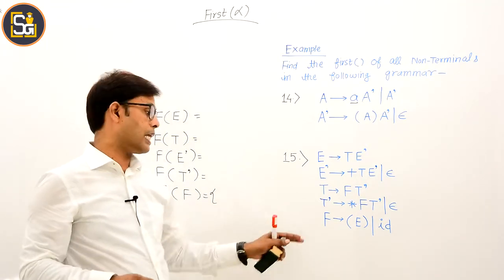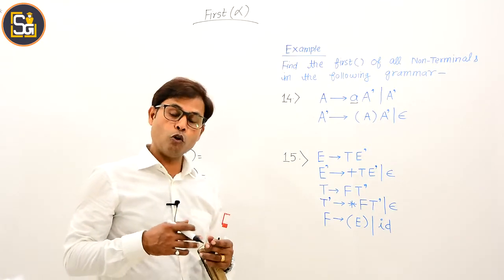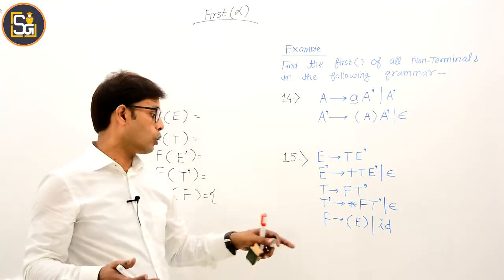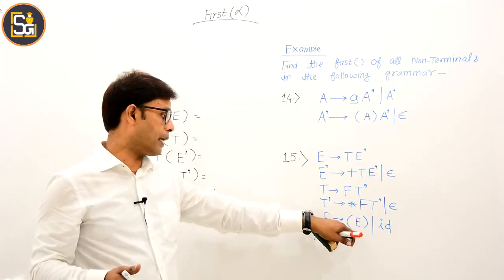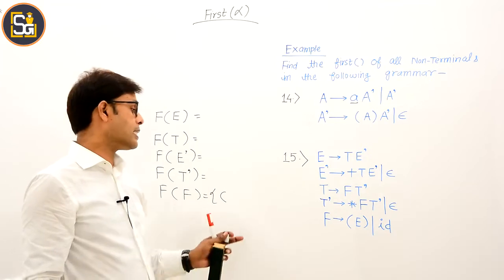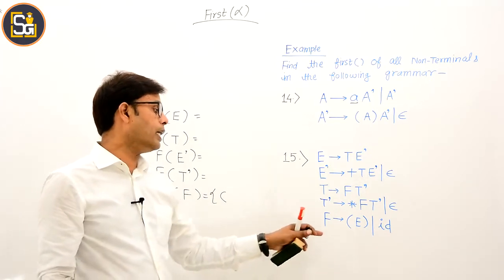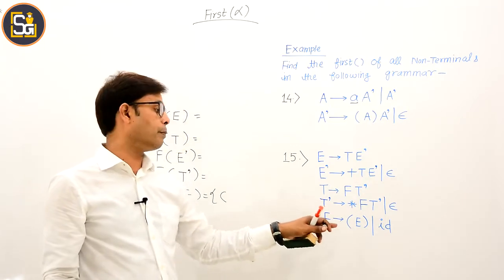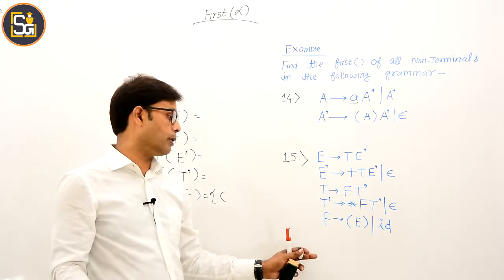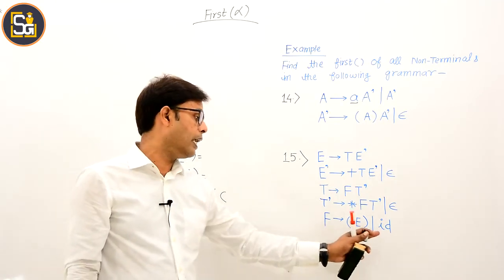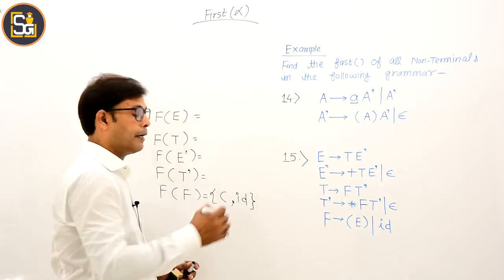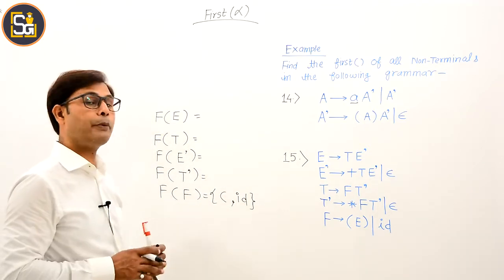F ka FIRST chahiye, to woh production dekhna padega jahaan F kuch derive kar raha ho. F derives opening parenthesis E closing parenthesis — iska matlab opening parenthesis to iske FIRST mein aana hi hai, kyunki jo bhi string is production se banegi uski beginning hamesha opening parenthesis se hogi. Aur F derives id, to id bhi iske FIRST mein aayega. Iske alawa F ka FIRST compute kar diya: opening parenthesis aur id.